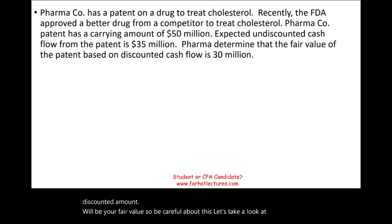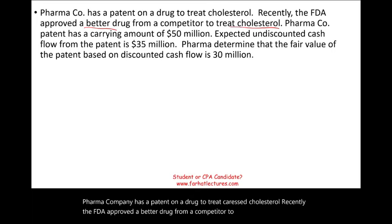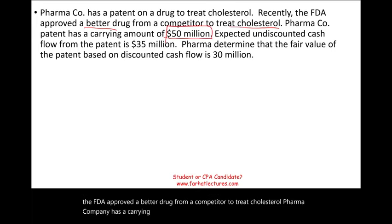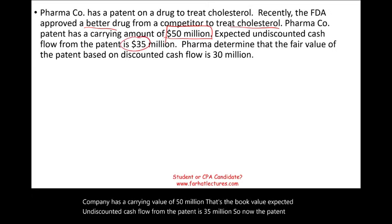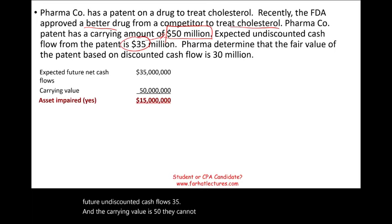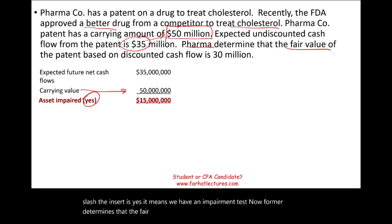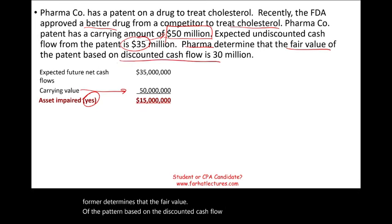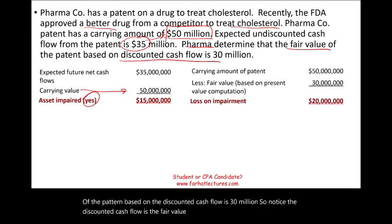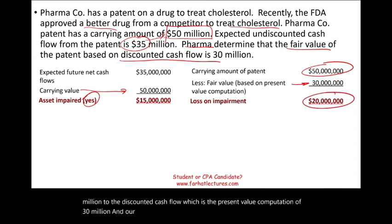Example: Pharma company has a patent on a cholesterol drug. The FDA recently approved a better competing drug. The patent's carrying value is $50 million. Expected undiscounted future cash flow from the patent is $35 million — less than the $50 million book value, so we cannot recover it. Therefore, the recoverability test confirms an impairment. Pharma determines the fair value based on discounted cash flow is $30 million, so the impairment loss is $20 million ($50M - $30M).